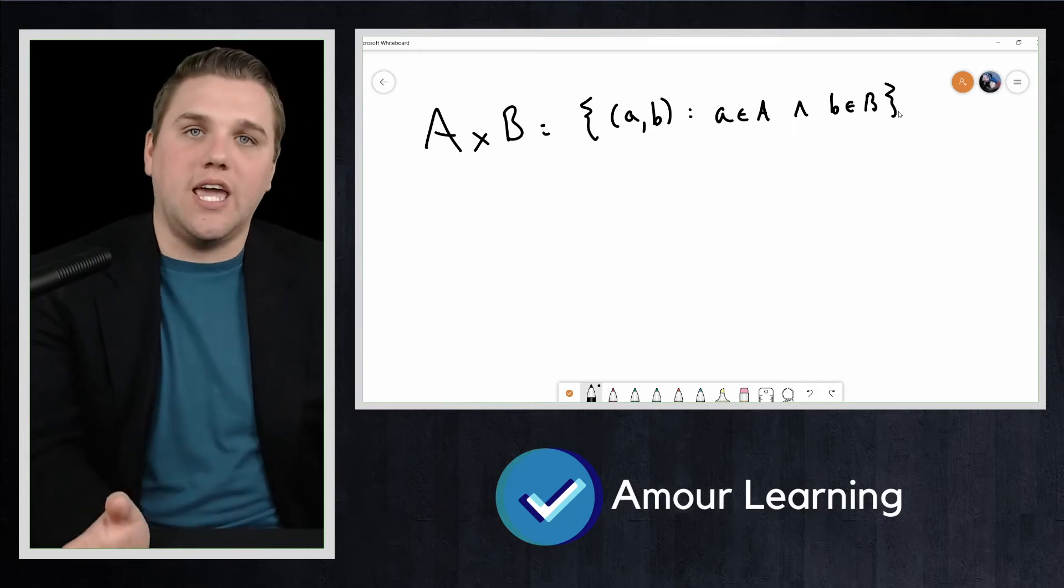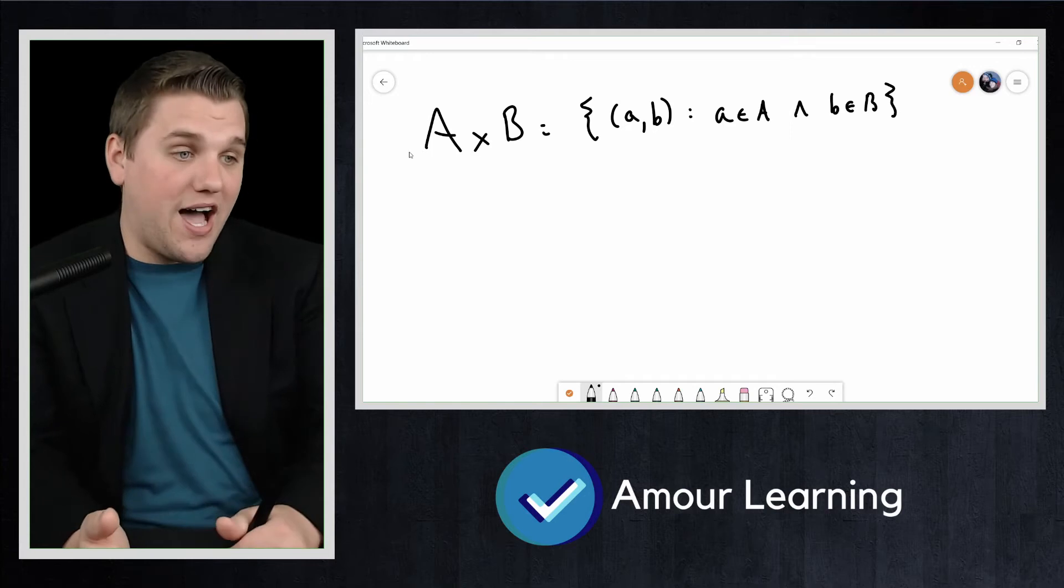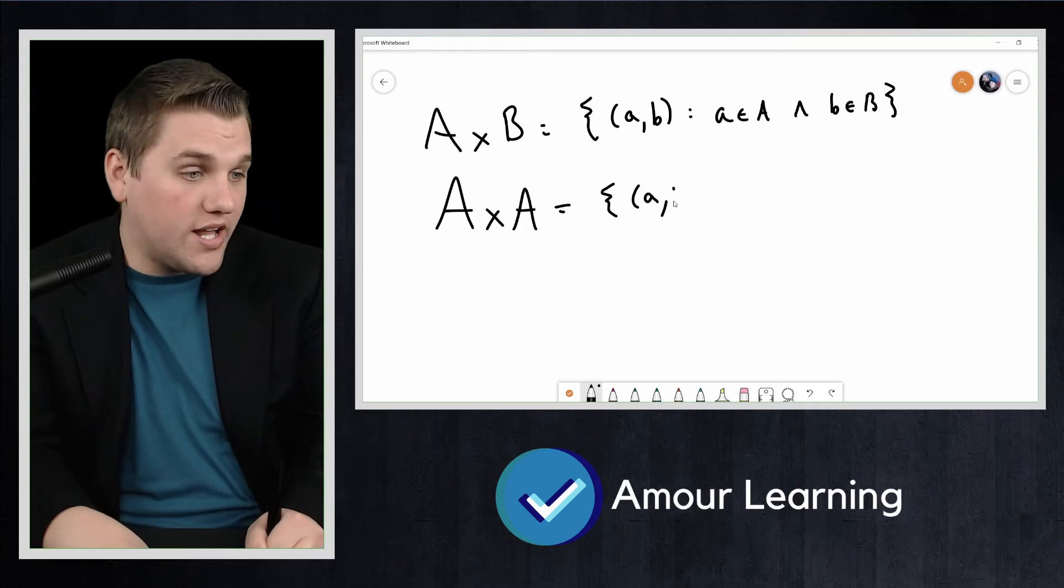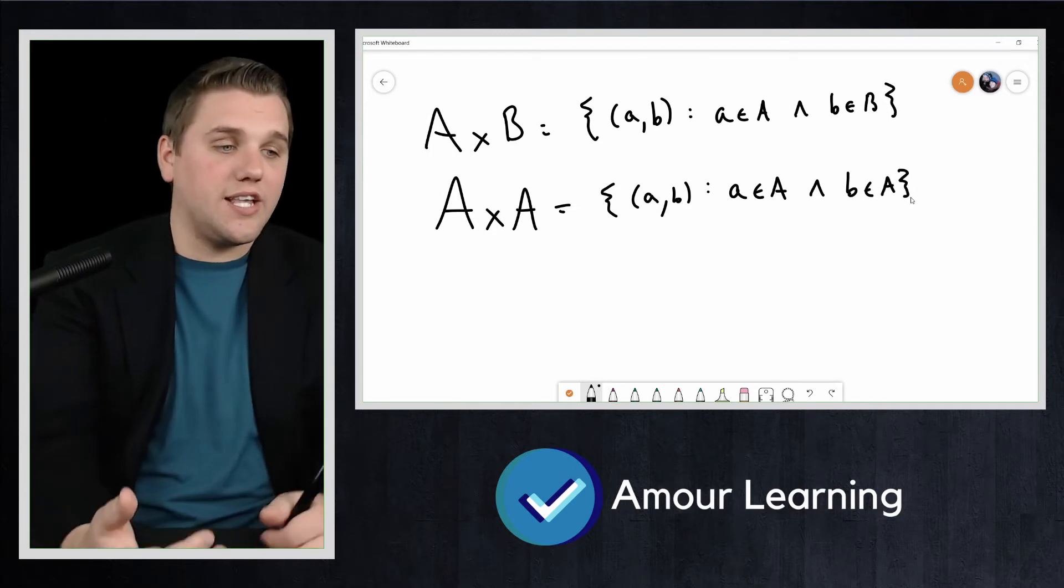Sometimes we will want to take the Cartesian product of a set with itself, and this is fine. In this case, it would be A cross A, which would be defined as all coordinates (a,b) such that a is in A and b is in A.